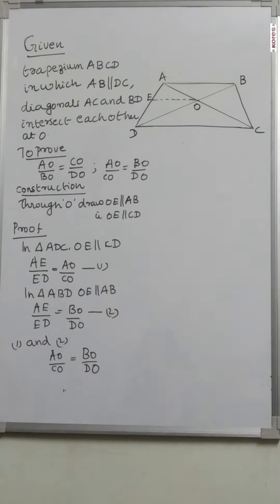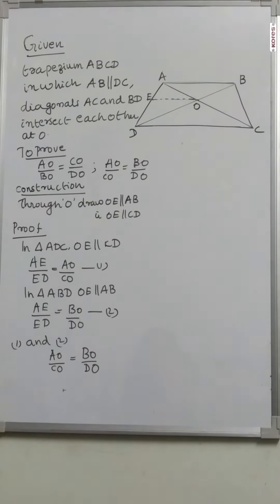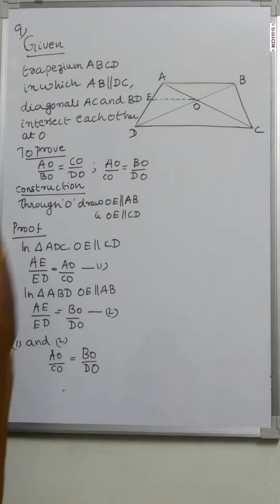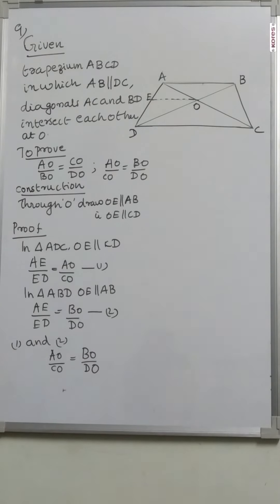The 9th question is also a practice problem. If you have any doubts solving the 8th question, please contact me. Question number 9: ABCD is a trapezium in which AB is parallel to DC and its diagonals intersect each other at point O. Show that AO by BO is equal to CO by DO.